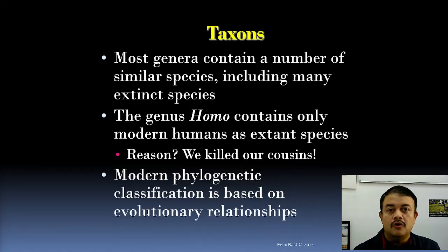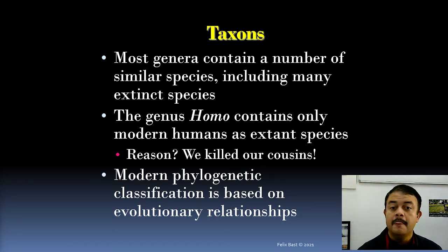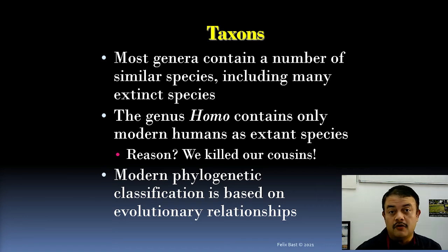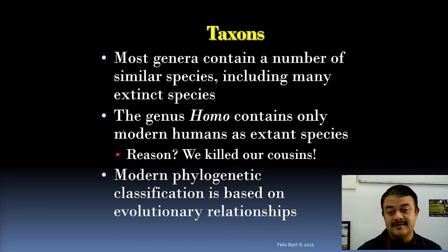This hierarchy is all about taxa. Most genera contain a number of similar species, including many extinct ones. For example, in the genus Homo, which we discussed in evolutionary biology, we have several species, but most Homo species — except our own — are extinct. The reason is that we killed all our evolutionary cousins. That is why only one modern human species exists today.